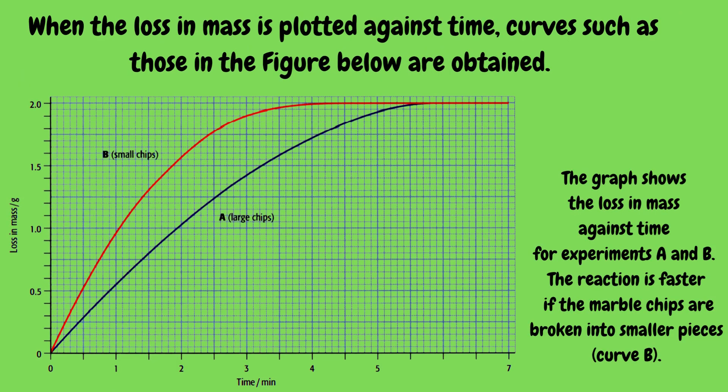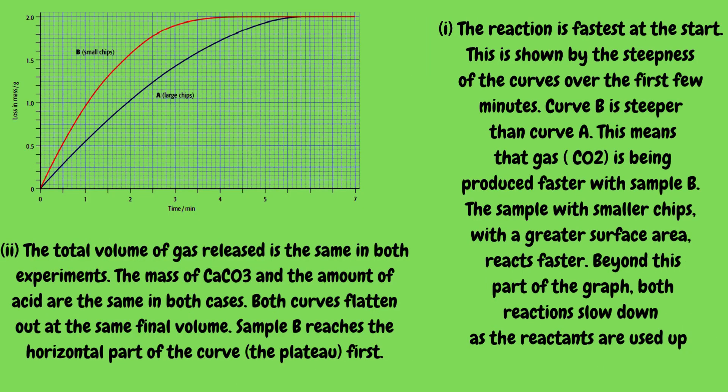When the loss in mass is plotted against time, curves such as those in the figure are obtained. The graph shows the loss in mass against time for experiments A and B. The reaction is faster if the marble chips are broken into smaller pieces, shown as curve B. The reaction is fastest at the start, shown by the steepness of the curves over the first few minutes. Curve B is steeper than curve A, meaning gas is produced faster with sample B, which has smaller chips and a greater surface area. Beyond this point, both reactions slow down as the reactants are used up.